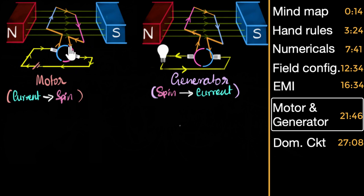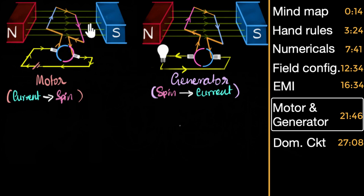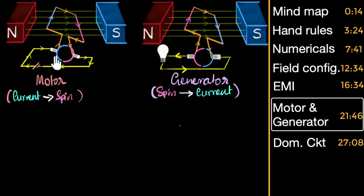An important thing to mention is the role of the split rings — this is called a commutator. What's its job? Because we have a split ring, every half a cycle the contact reverses, and as a result the current starts reversing in the coil. That reversal of current is required because without it, the coil wouldn't keep on turning. If the coil needs to keep on turning, the current needs to keep on reversing. The battery doesn't reverse the current, so we reverse the contacts every half a cycle — that reverses the current in the coil and keeps it spinning. The commutator's job is to keep reversing the contact so as to keep reversing the current.